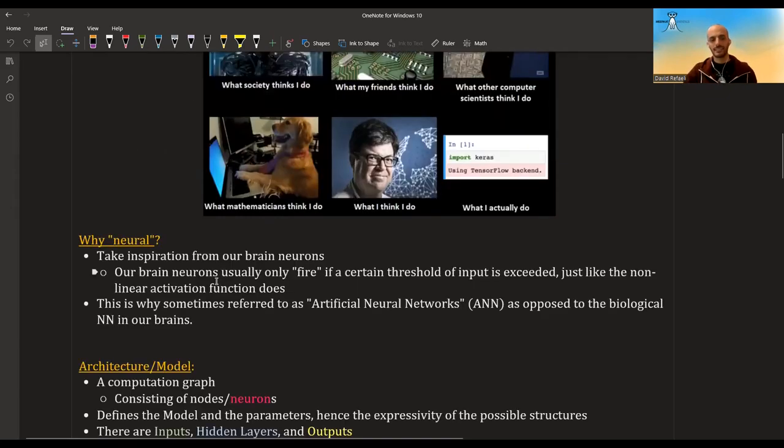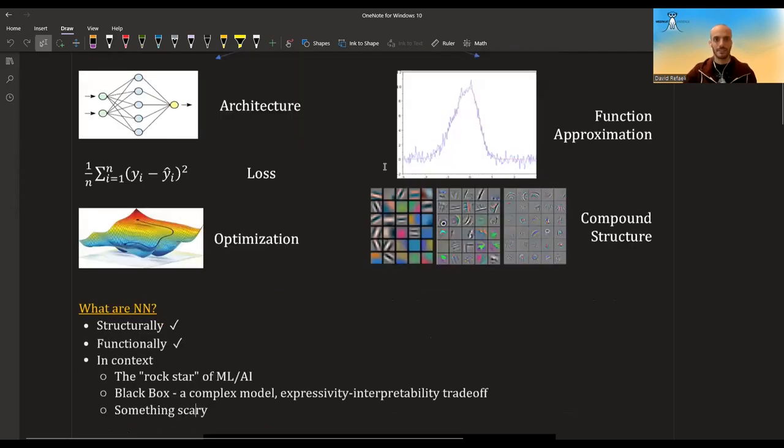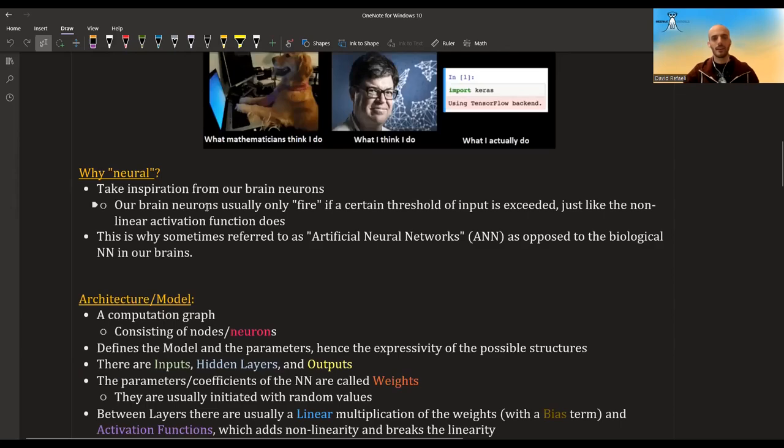Another question is why are they called neural networks? Originally these architectures took inspiration from our own brain and neurons. Just like the neurons in our brain, our neurons only fire and communicate electricity to other neurons if their stimulus exceeds some threshold. Very similarly, the artificial neural networks do exactly that. This is why they are sometimes referred to as artificial neural networks to distinguish them from the biological networks of neurons in our brains.